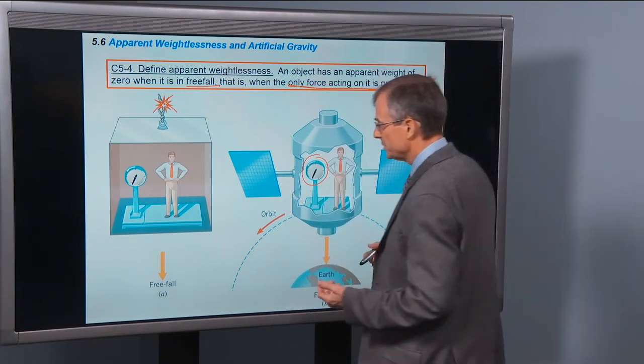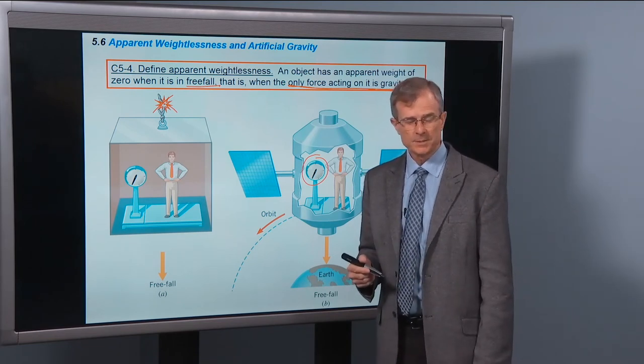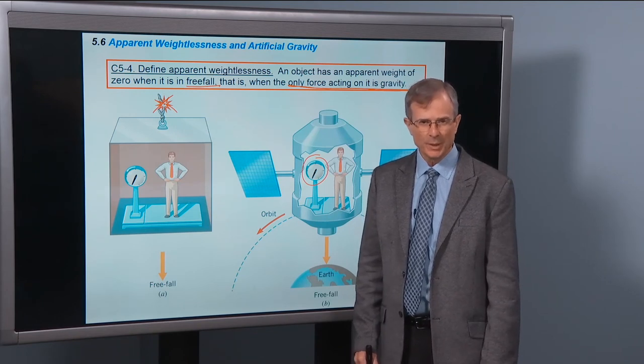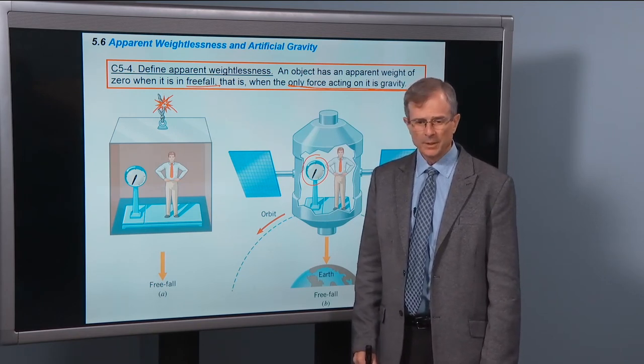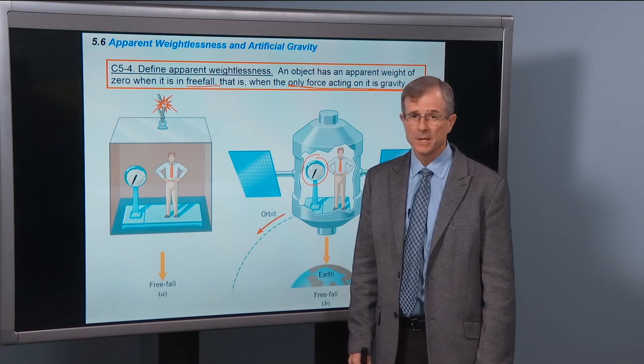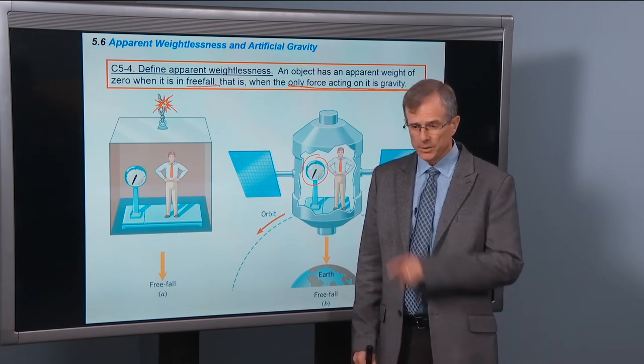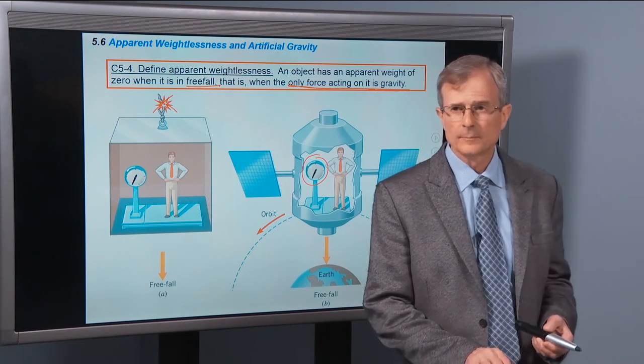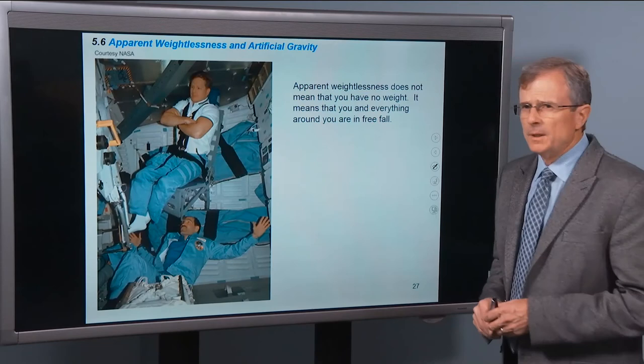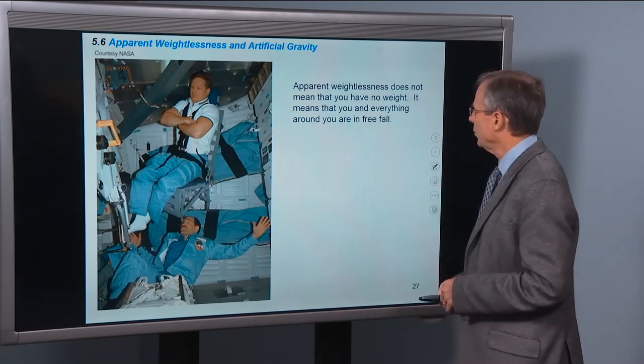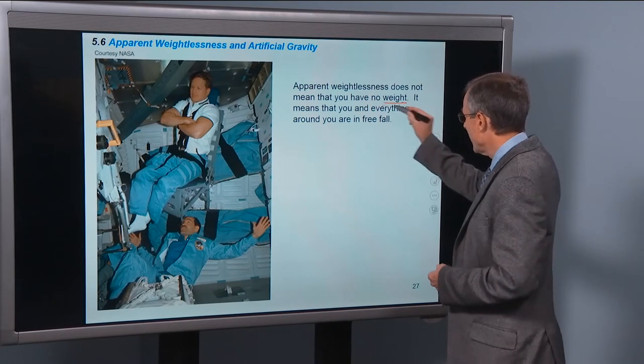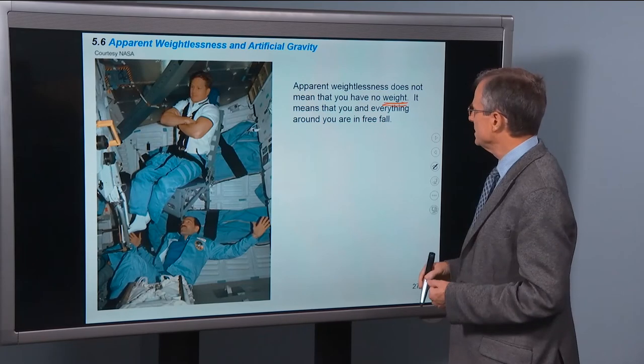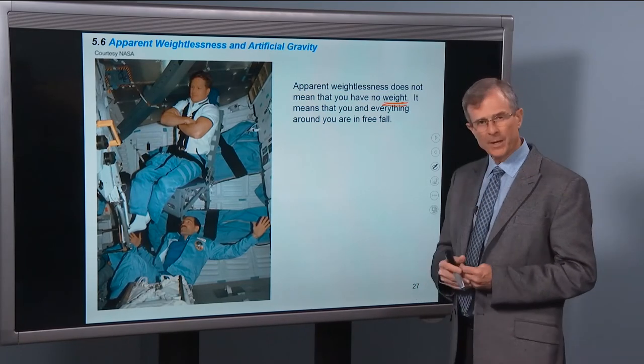I had an argument with a national public radio reporter on this subject. And she, at the end of several minutes talking about it, she still didn't believe me. She said, no, the gravity is zero up there. And I said, no, gravity is not zero. If it were zero, then you would fly off into space and you wouldn't stay in orbit around the Earth. So apparent weightlessness does not mean that you have no weight. Weight is the force of gravity acting on you from chapter 4. What apparent weightlessness means is that you and everything around you are in freefall.